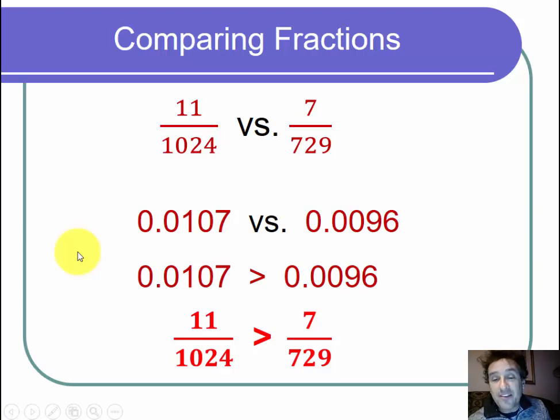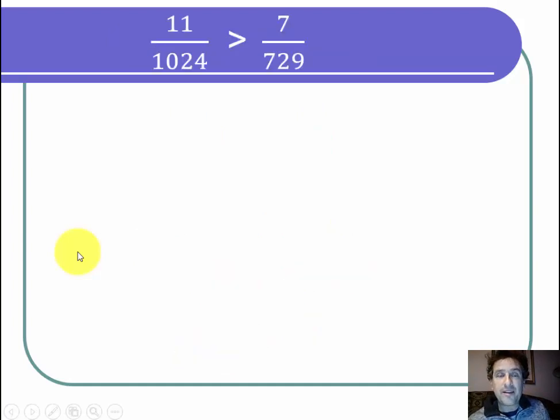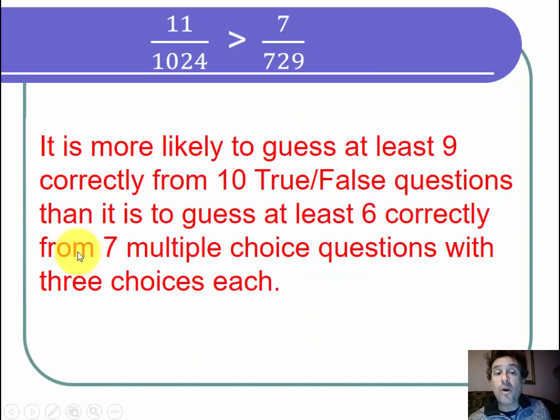Now let's put this in words. We can say that it is more likely to guess at least 9 correctly from 10 true-false questions than it is to guess at least 6 correctly from 7 multiple-choice questions with three choices each.